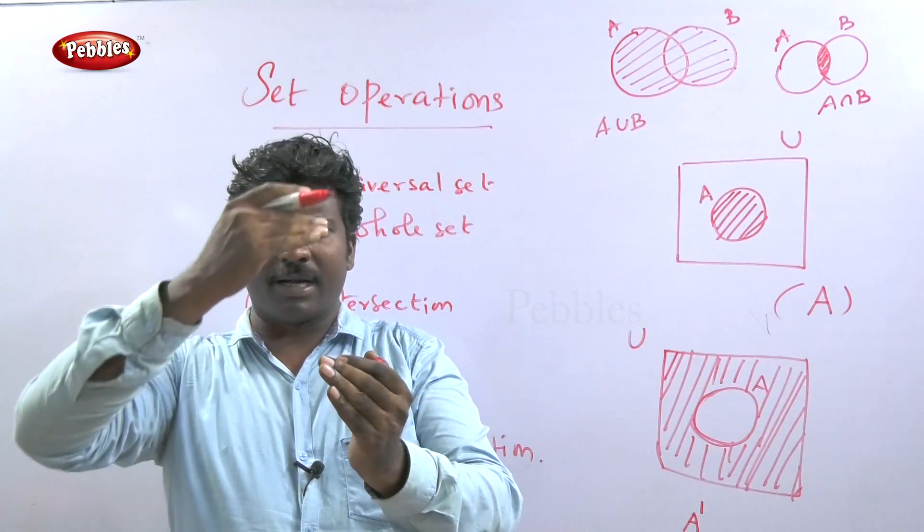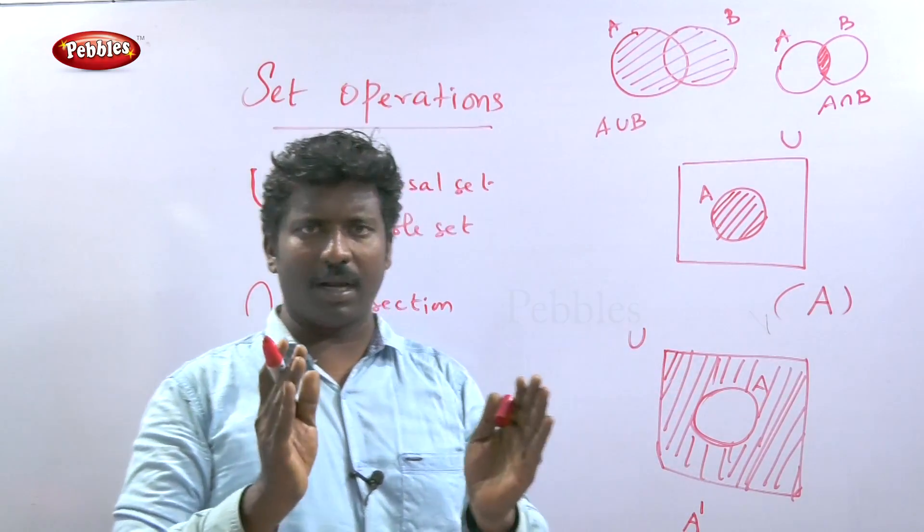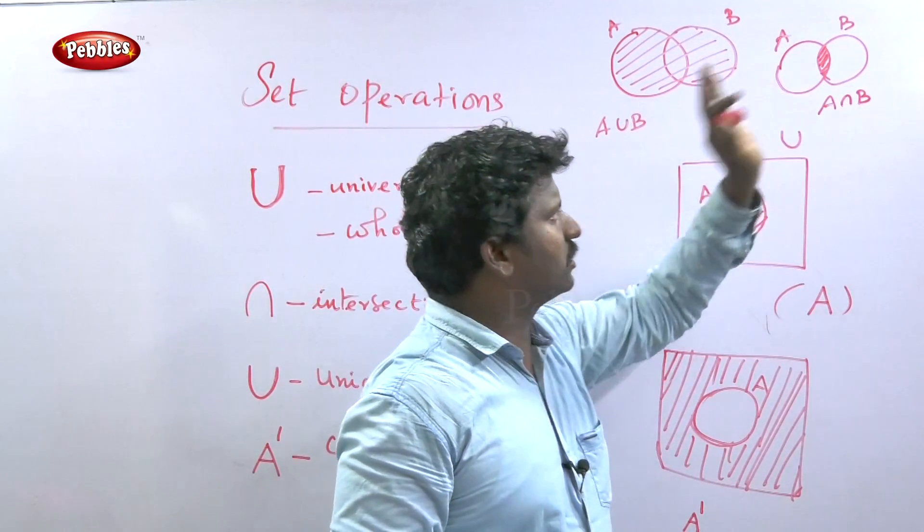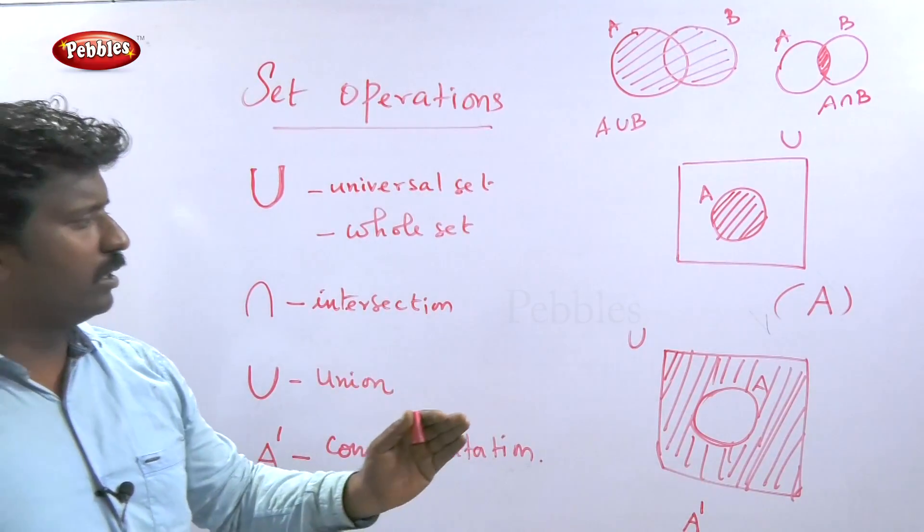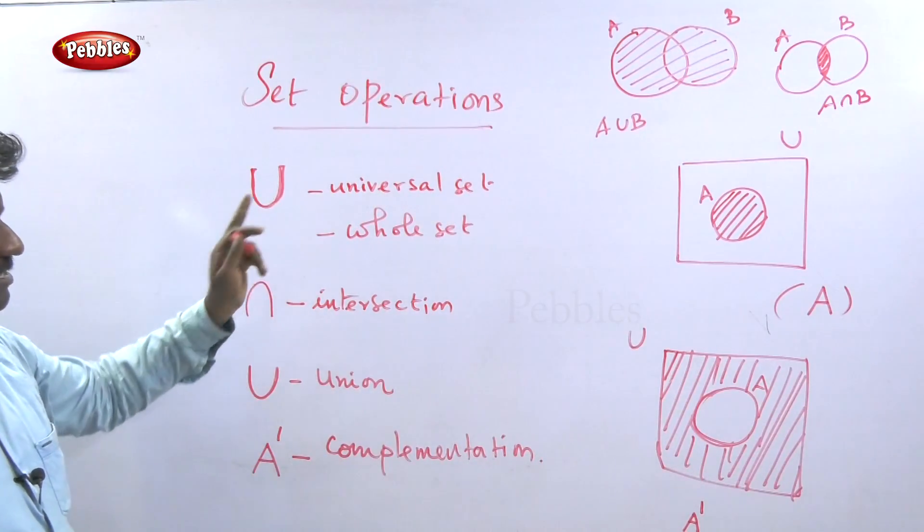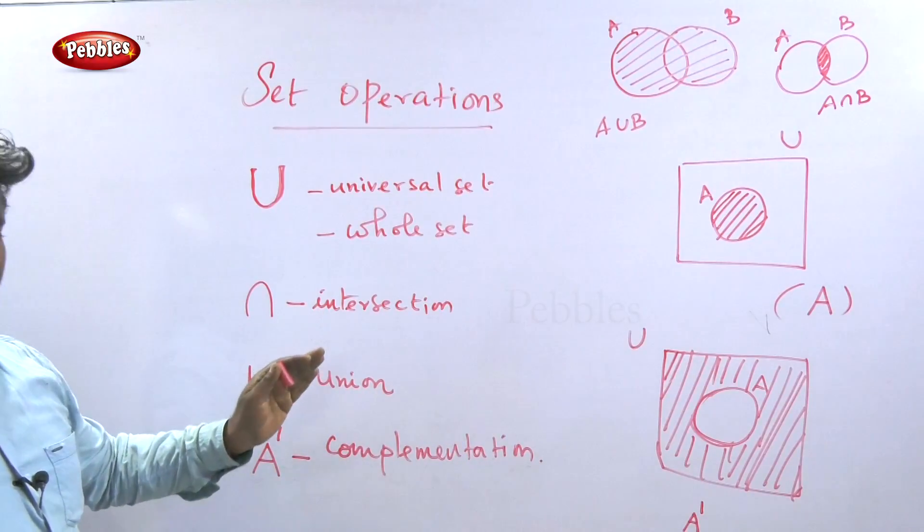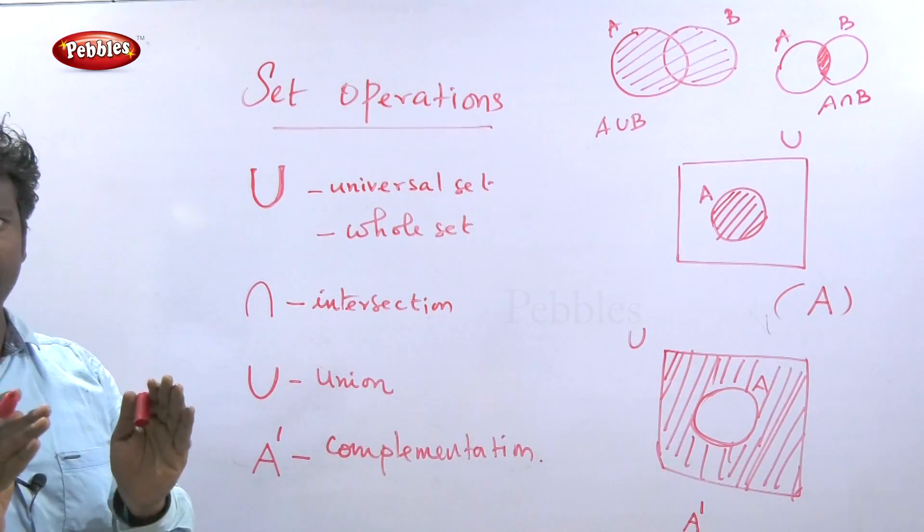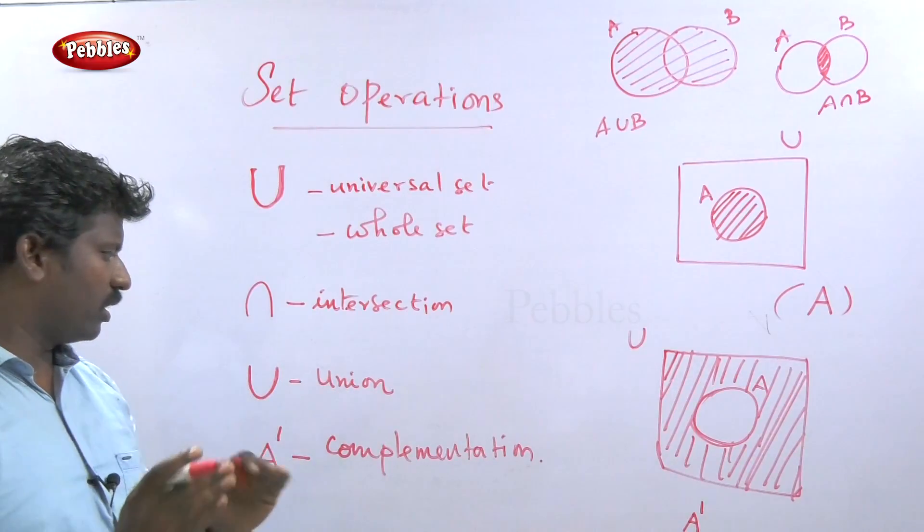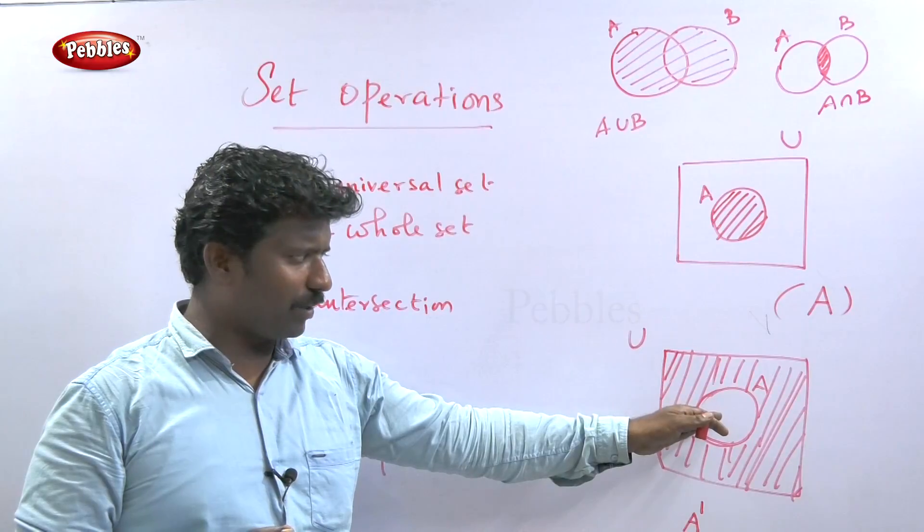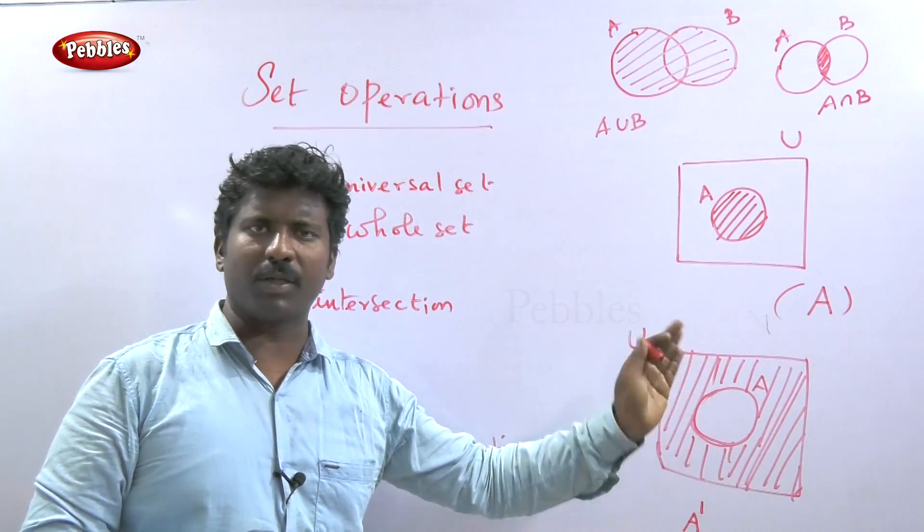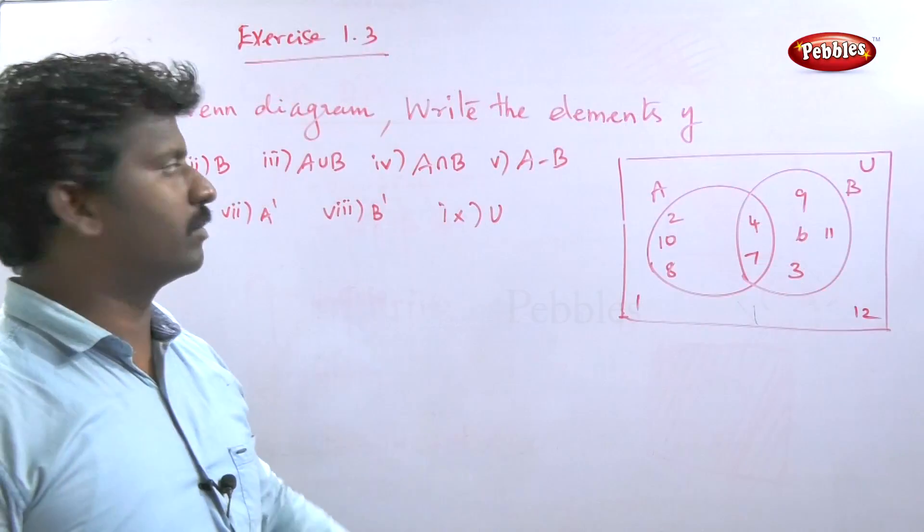Common elements of A and B is the intersection. Complement is the elements not in A but in the universal set. For example, A complement is the universal set minus A. The common part is intersection, the joined part is union, and complement means removing from the universal set.